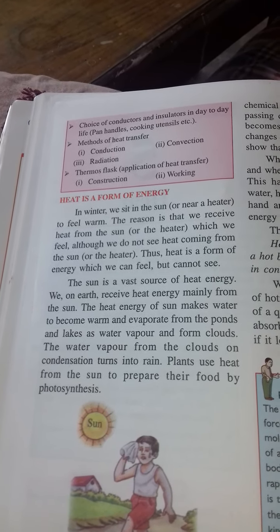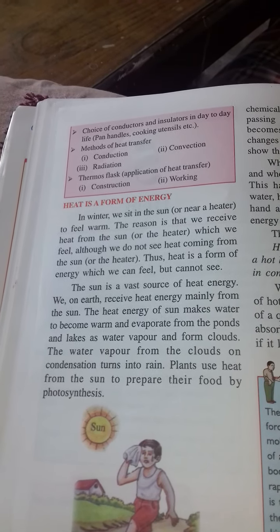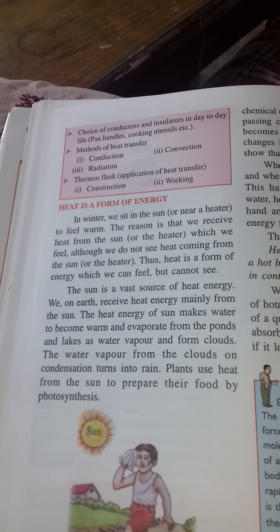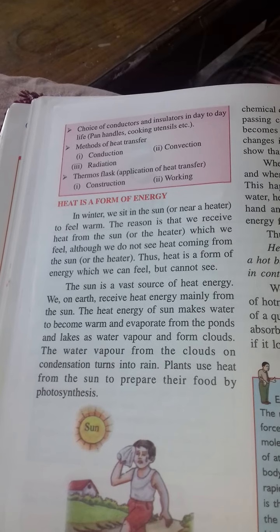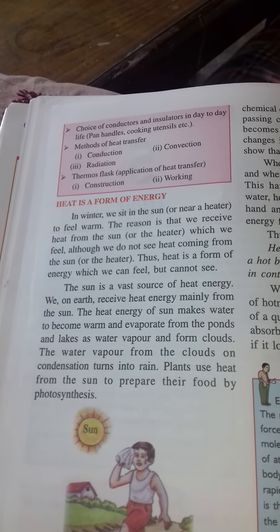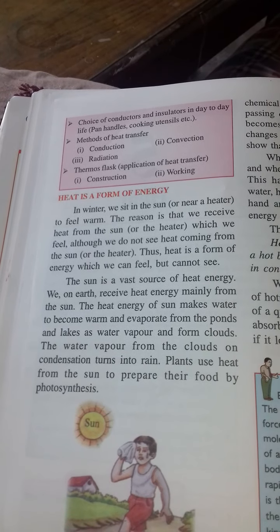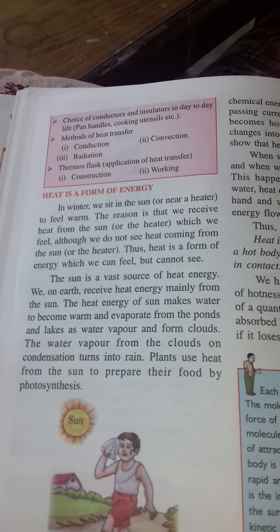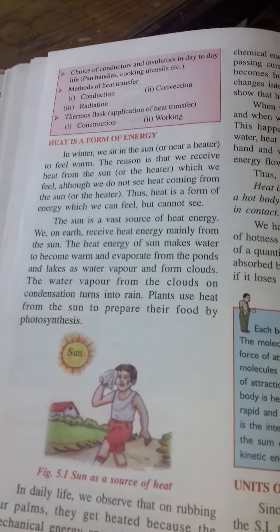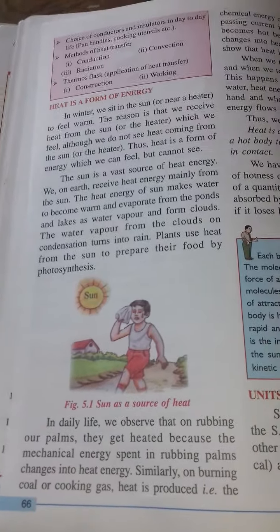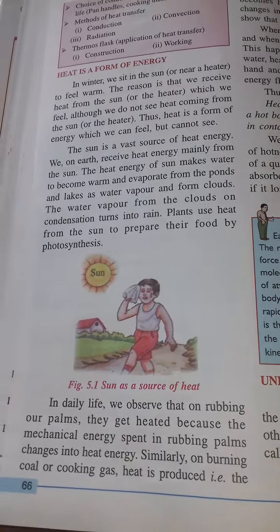We all know that the sun is a vast source of heat energy. On earth, almost everything is happening because of the heat energy we receive from the sun. Like the water cycle — heat energy makes water warm, then it evaporates, becomes water vapor, becomes clouds, and finally it rains. Plants use the sun's energy to prepare their food through the process of photosynthesis. So many things are there; we need heat for that.